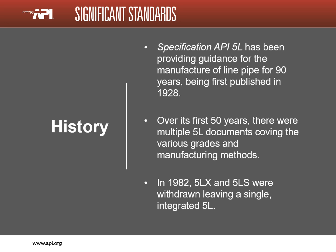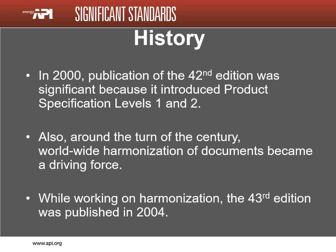The first edition of API 5L was published 90 years ago, in 1928. During its first 50 years, there were three 5L documents. In 1982, all three documents were combined into one, API 5L. In 2000, the 42nd edition introduced product specification levels 1 and 2. Many of the requirements that previously had to be ordered individually were made standard practice for PSL 2 pipe — requirements such as fracture toughness, maximum yield strength, carbon equivalent, limits on several chemical elements, and product traceability records.